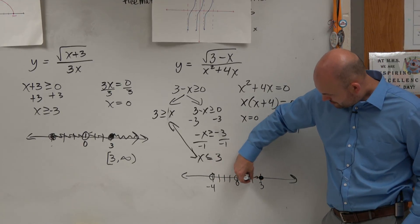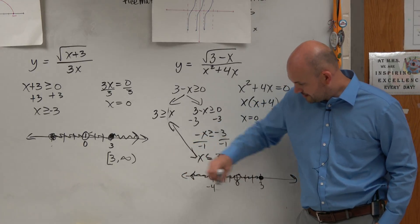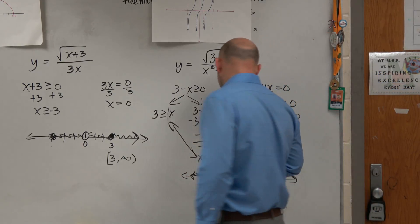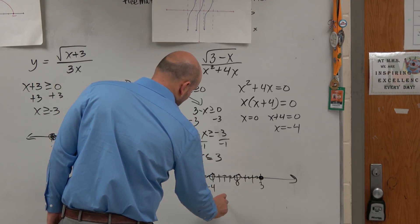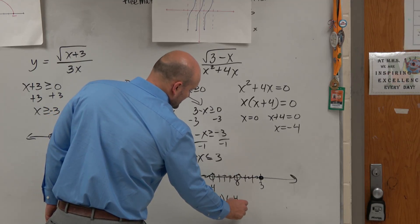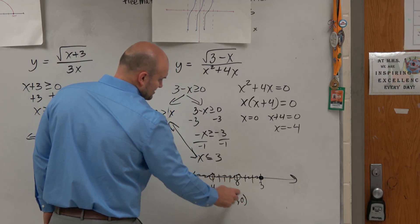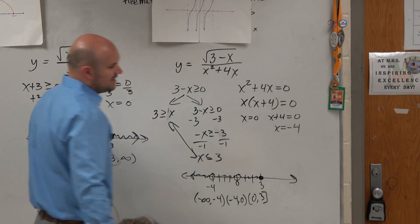So 3 is good, but we can't include the undefined values. So your domain would look like negative infinity to negative 4, that's that set. From negative 4 to 0, that's that set. And then from 0 to 3, that's the last set.